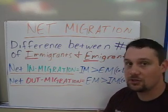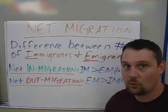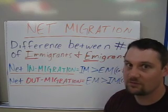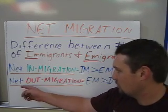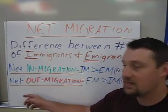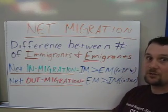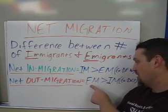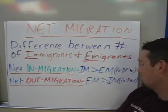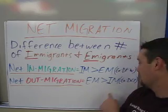An example of net in-migration for a US city is Dallas-Fort Worth, because more people move to Dallas-Fort Worth than move away from it. Another way to think about this is net out-migration — net out-migration means you have more people leaving than you have people coming in. An example American city for that is Detroit.